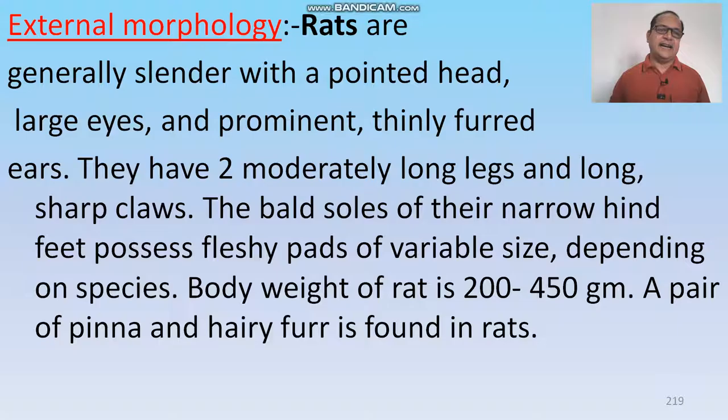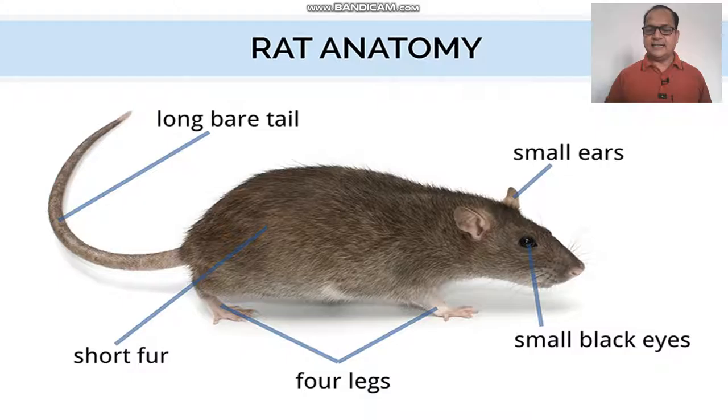Rats are generally slender with a pointed head, large eyes, and prominent thin fur ears. They have two moderately long legs and long sharp claws. Their hands and feet possess fleshy pads of variable size depending on the species. Body weight is 200 to 450 grams. A pair of pinnae and hairy fur is found on rats.